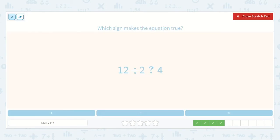Which sign makes the equation true? Well, now we need to solve 12 divided by 2. Let's count by 2's until we get to 12. 2, 4, 6, 8, 10, 12. That was 6.